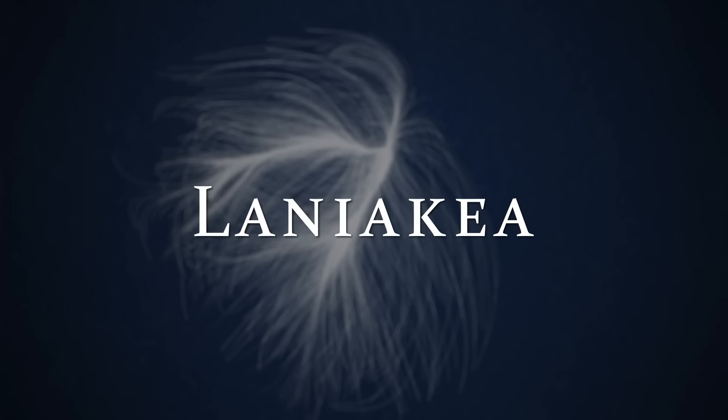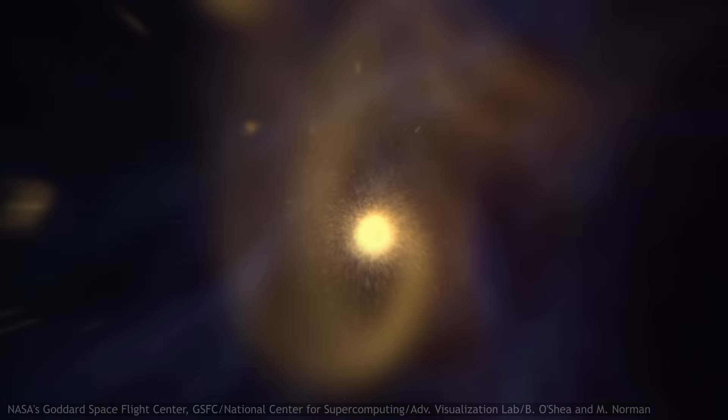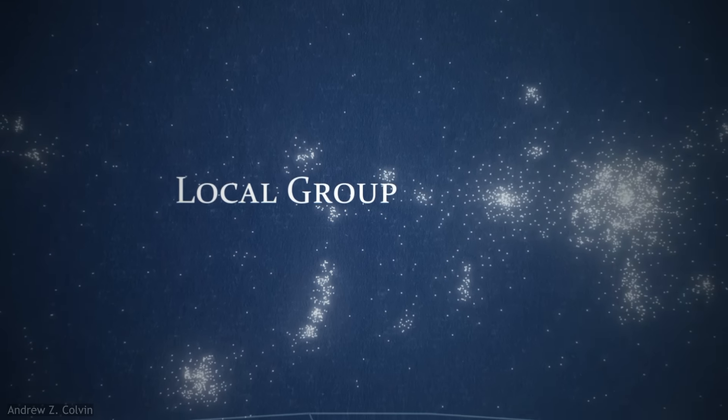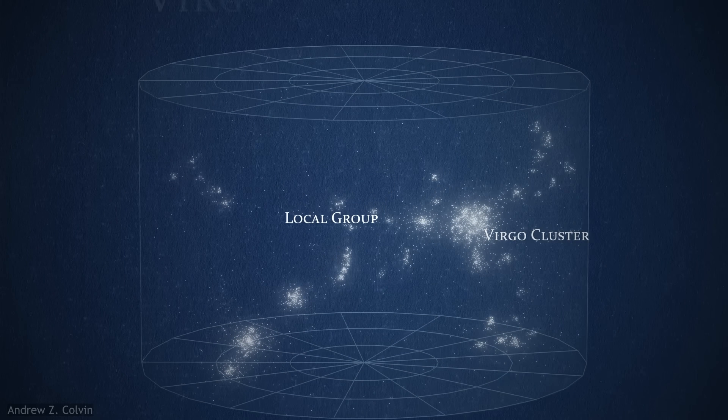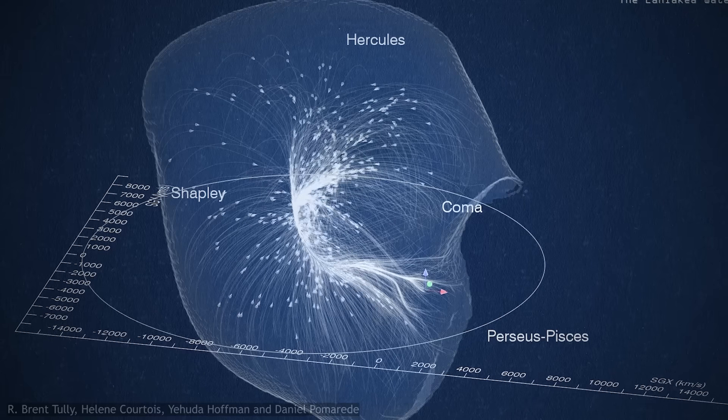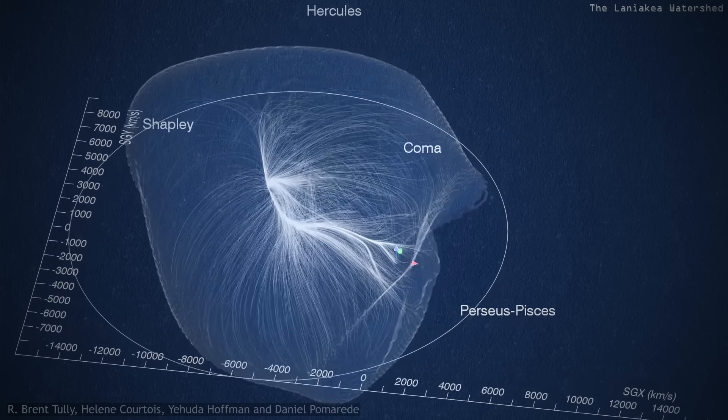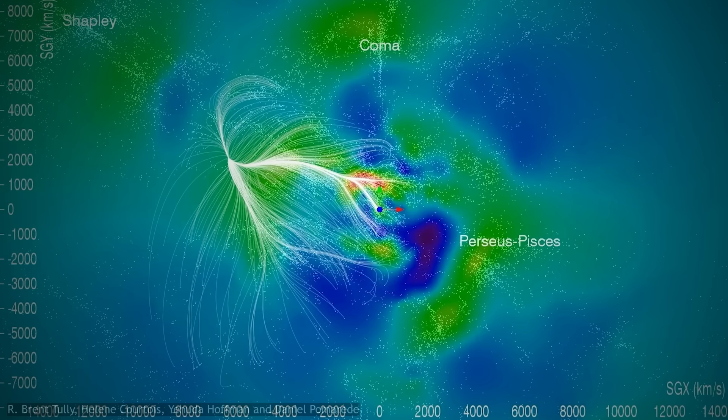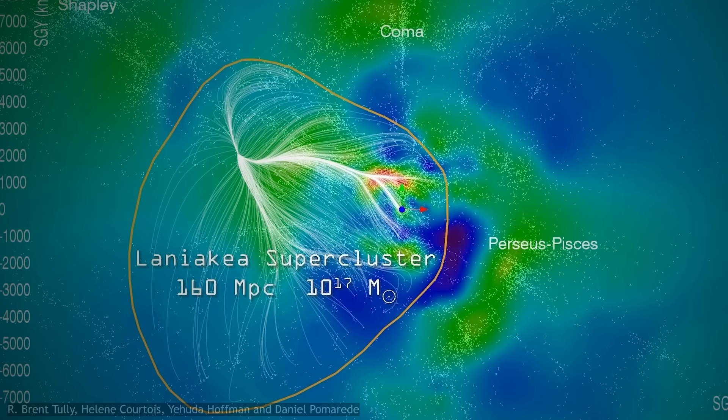And so the Milky Way galaxy belongs to the local group because we are all moving towards a common centre, which would eventually become a gigantic singular galaxy. The local group belongs to the Virgo branch of our supercluster because we are all headed towards the Virgo cluster. And the Virgo supercluster branch belongs to Laniakea because we are all moving towards the centre of Laniakea.